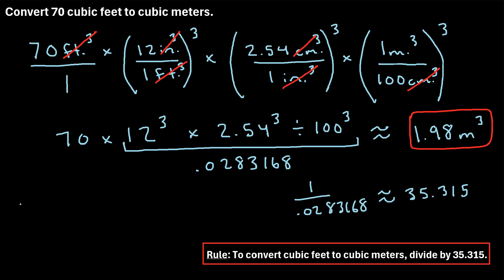in this one, you would find that to convert 70 cubic feet to cubic meters, if you just did 70 divided by 35.315, you would end up with about 1.98, which is the exact answer that we got here by multiplying all of these values out.